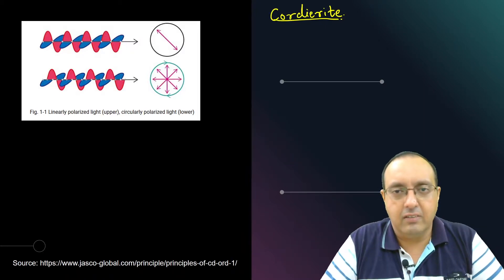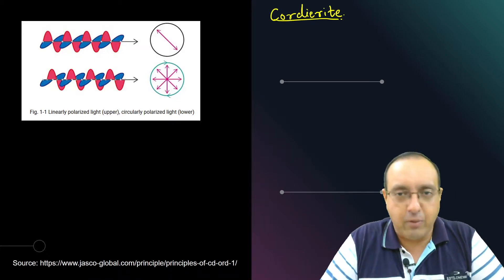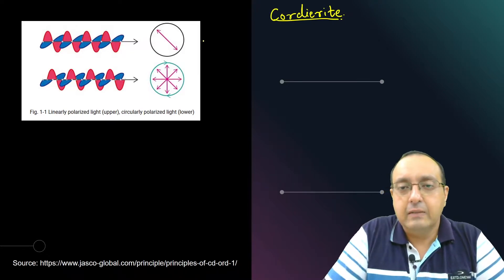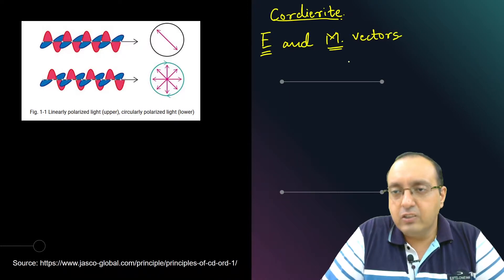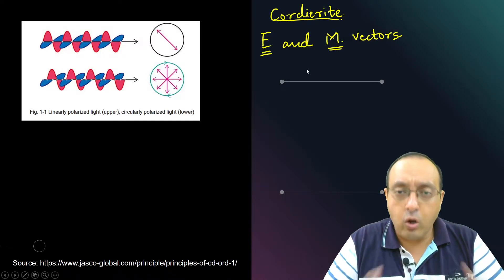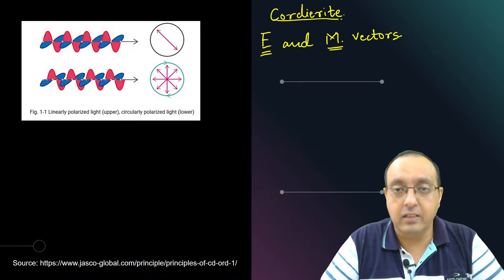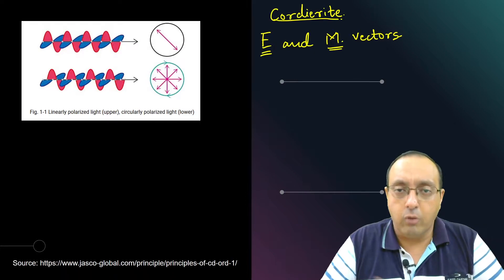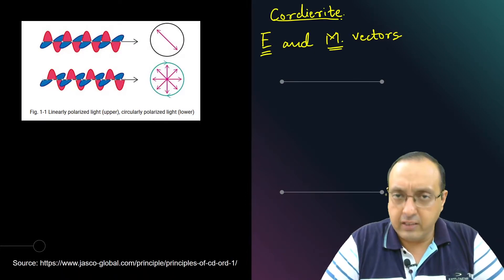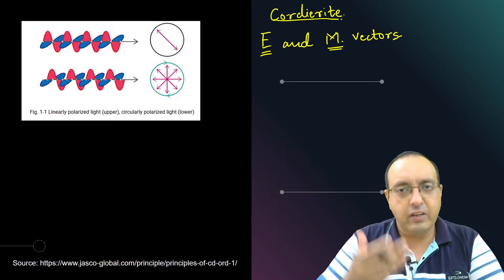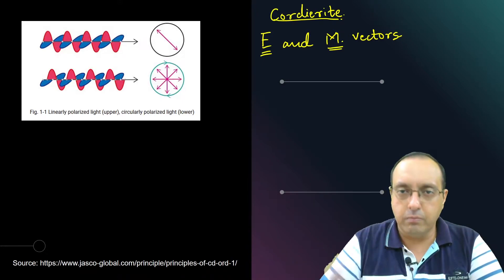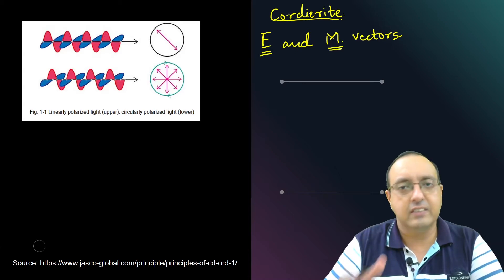To understand this, let's refresh our basics of electromagnetic radiation. Light is the main example of electromagnetic radiation — it has two vectors, the E and M vectors, which are the electric and magnetic vectors. These are perpendicular to each other. Normal light, such as the light in a room, is not polarized; the vectors are positioned in all directions, vibrating in a total 360-degree fashion.